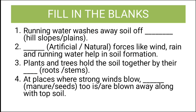Now let us see fill in the blanks. First: running water washes away soil off — hill slopes or plains? Second: dash artificial or natural forces like wind, rain, and running water help in soil formation. Third: plants and trees hold the soil together by their — roots or stems? Fourth: at places where strong winds blow, dash — manure or seeds — are blown away along with the topsoil.